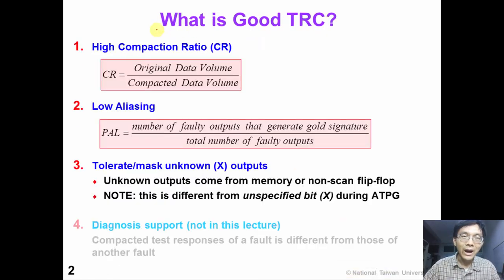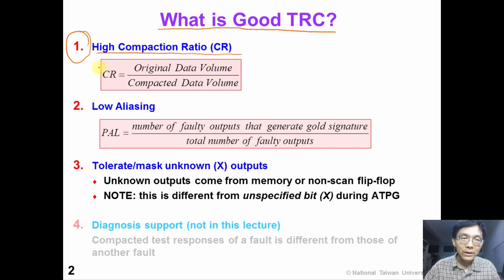So what are the requirements for a good test response compactor? First of all, this compactor must have very high compaction ratio or CR. The compaction ratio is defined by the original data volume divided by the compacted data volume. If this number is large, then we have very effective compaction.